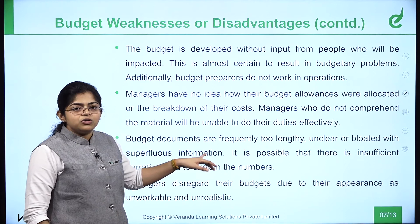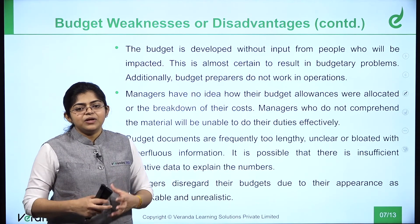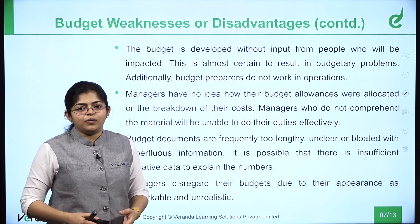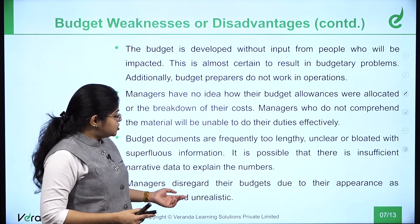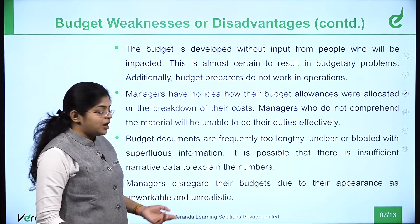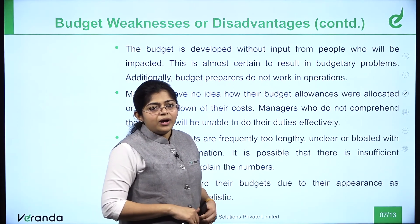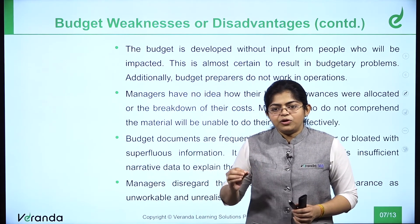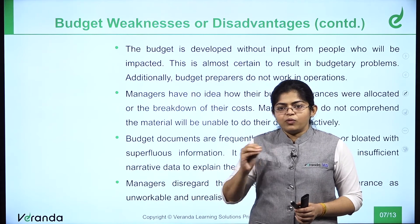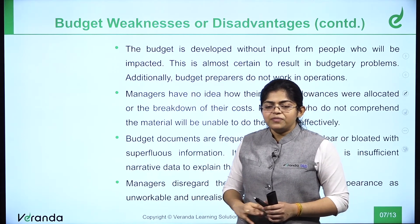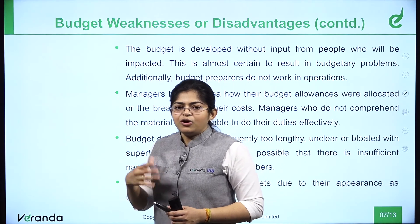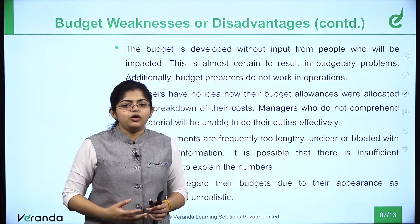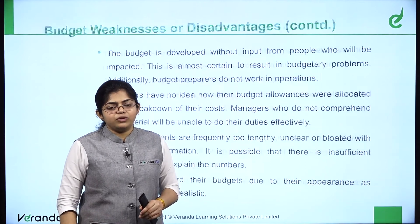The lengthy budget document creates distance between the public and policy planners, not creating adequate outcomes. Additionally, managers disregard their budgets when they appear unworkable and unrealistic. When a department begins implementing a budget and realizes it is not going to work, there is no option to change it mid-year. Even knowing the reality that it will not work, they cannot do anything — the plan will be executed as-is. Only in the next financial year will they get an opportunity to bring changes. This rigidity is one of the key weaknesses of the budget.